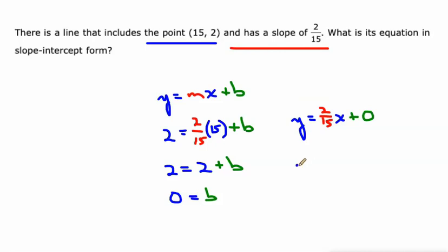But again, why would we write the plus 0? We don't need to, we'll just do 2/15 times x. And we'll call that good.